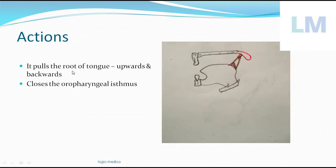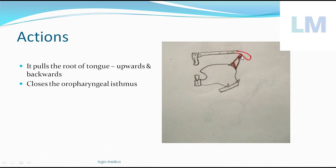The action of this muscle is to pull the tongue upwards and backwards, creating a wave. This closes the oropharyngeal isthmus — the window or opening between the oral cavity and the oropharynx. When palatoglossus pulls the tongue upwards and backwards during swallowing, the tongue touches the palate and the food that has passed into the oropharynx cannot come back into the oral cavity.